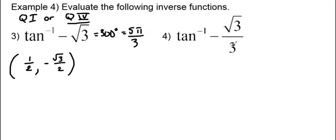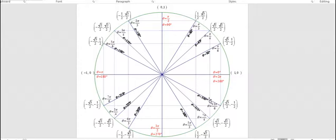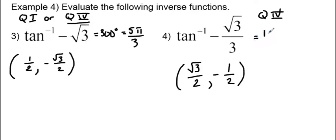Inverse tangent of negative radical 3 over 3. We already know we are in the fourth quadrant. The angle whose tangent is radical 3 over 3 has coordinates radical 3 over 2 and 1 half, but since this is negative, we're in quadrant 4 where the y coordinate is negative. Looking at the unit circle, that happens at 11 pi over 6, which is the same as 330 degrees. So the answer is 11 pi over 6 or 330 degrees.